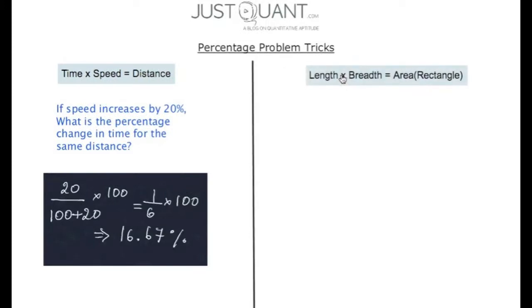Let us take another example. We know that length × breadth = area of a rectangle. Given that the area is constant, this is another example of A × B = constant k.